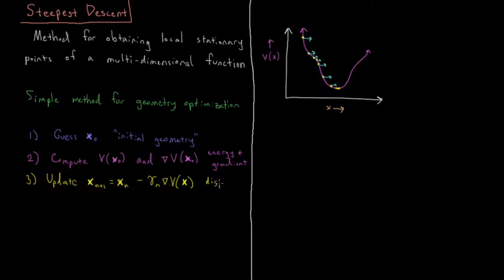So we are displacing the geometry by a certain amount. Each individual coordinate gets displaced by the magnitude of the partial derivative with respect to energy in that dimension at that given time, and then they're all multiplied by a common scale factor.